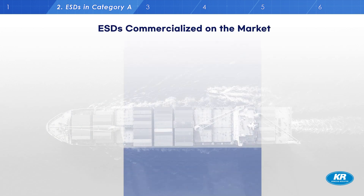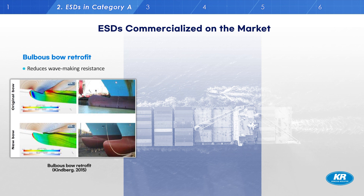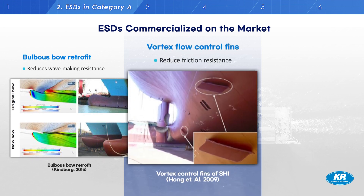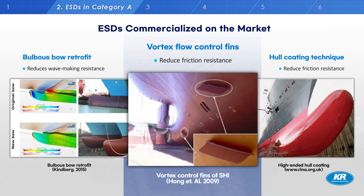Now I will briefly introduce ESDs commercialized on the market. A bulbous bow retrofit can reduce wave-making resistance. The vortex flow control fin can reduce the hull's frictional resistance. Hull coatings can also be another option, contributing to reducing the frictional resistance of the hull. These are all techniques to reduce a ship's resistance.